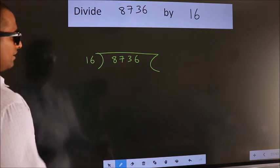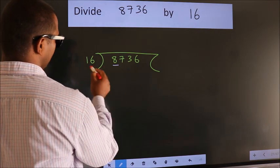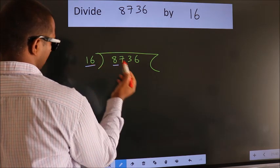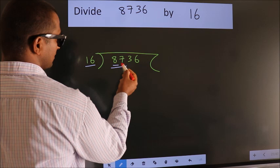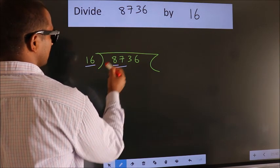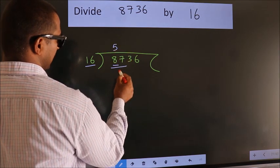Next, here we have 8. Here 16. 8 is smaller than 16, so we should take 2 numbers: 87. A number close to 87 in 16 table is 16 fives, 80.